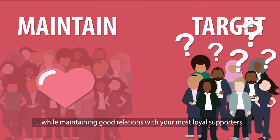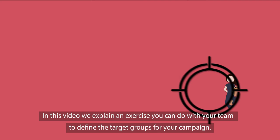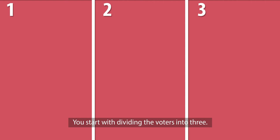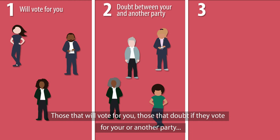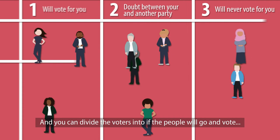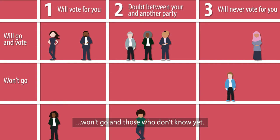In this video we explain an exercise you can do with your team to define the target groups for your campaign. You start by dividing the voters into three groups: those that will vote for you, those that doubt if they will vote for you or another party, and those that will never vote for you. You can also divide voters by whether they will go and vote, won't go and vote, or don't know yet.